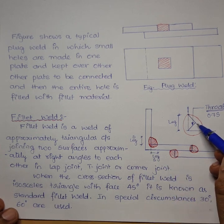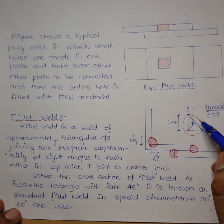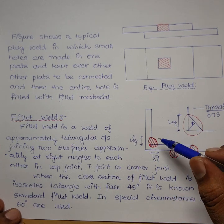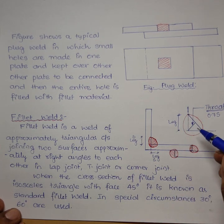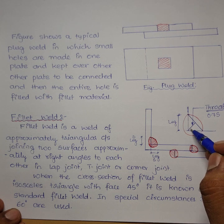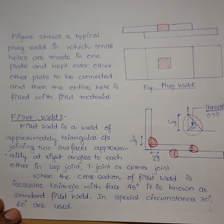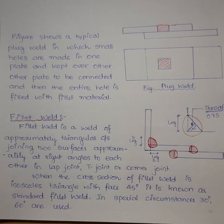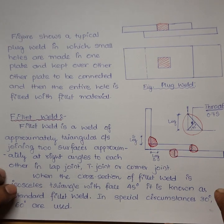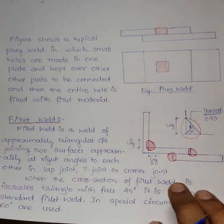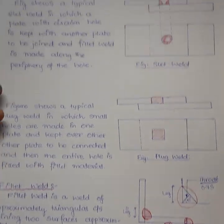An ideal fillet weld is a weld with an angle of 45 degrees. Next we will go with slot weld and plug weld.